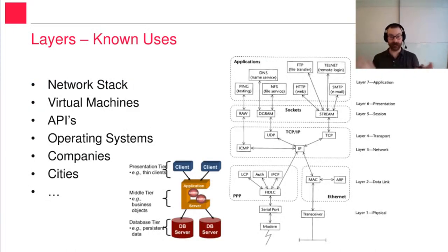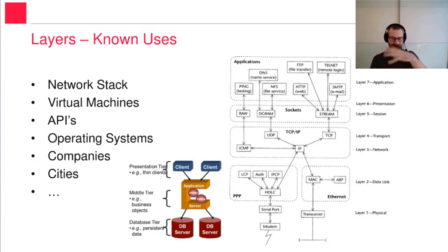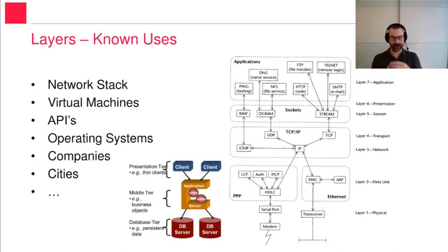Layers are used everywhere in applications. The best example may be the network stack — the TCP/IP or ISO OSI reference model — where we have seven layers or five layers depending on how you look at it. Then for virtual machines, we use layers: we have the operating system underneath, then the virtual machine which provides a sandbox, and inside the virtual machine we install another operating system. Maybe we use Docker or some other isolation mechanism — those are also examples of layers.